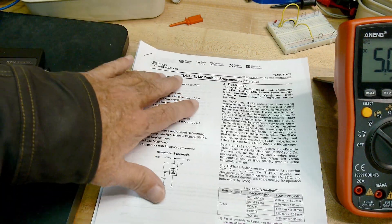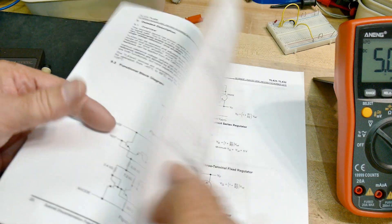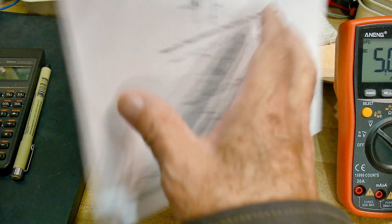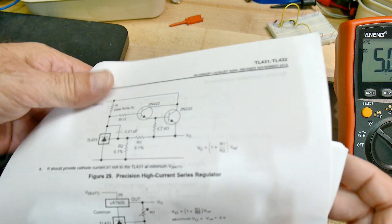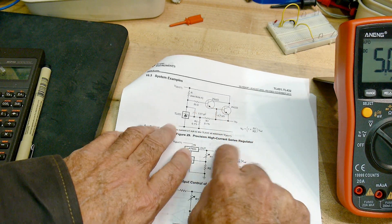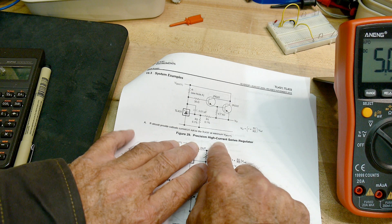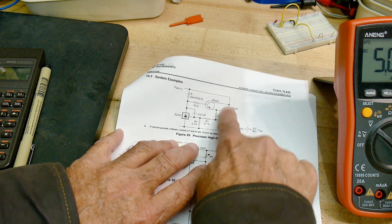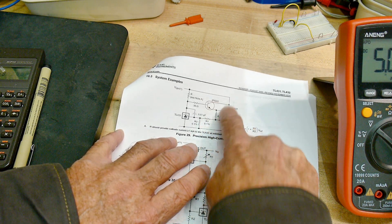I would suggest you print out the data sheet for the part. And in the back, they give some application notes of things you can do with this. Here they're using it for a high current regulator.